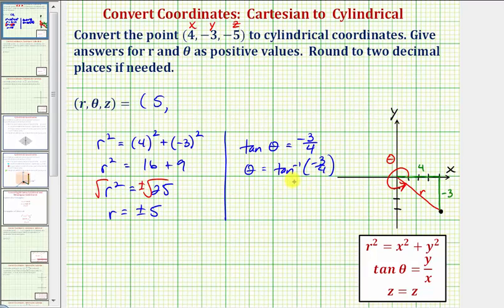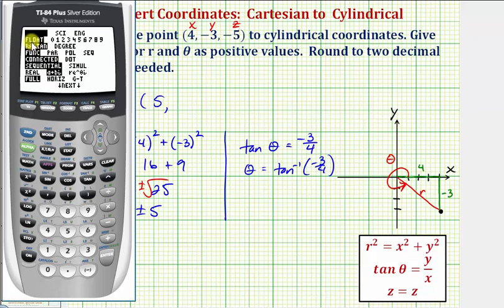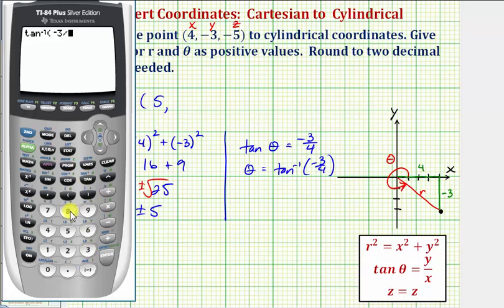Here we might recognize that the output of the inverse tangent function is on the open interval from negative pi over two to positive pi over two. So the calculator is not going to give us the angle theta that we're looking for, but we can still use the calculator to find this angle. Let's first verify that we are in radian mode. So we'll press the mode key. Radian is highlighted, so we'll go back to the home screen. Press second tangent negative three divided by four, close parenthesis, and enter.